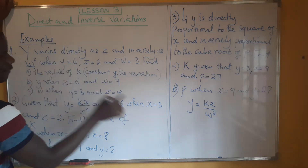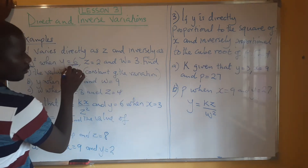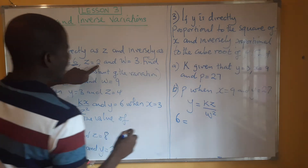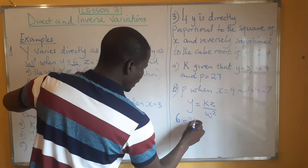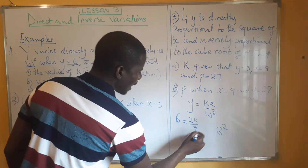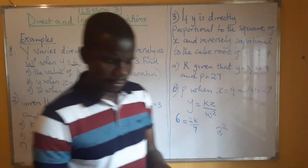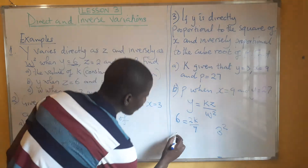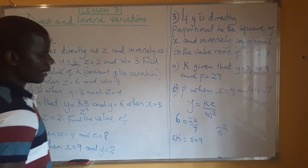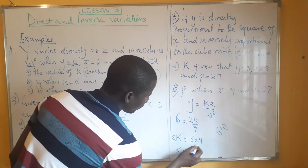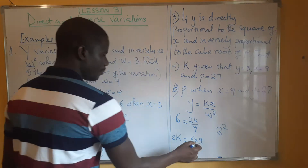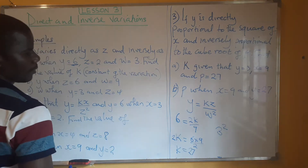We need to find the constant K using the given values. Y has been given as 6, Z has been given as 2, so 2 multiplied by K gives us 2K. Our W is 3 squared, which is 9. So we have 2K equals 6 multiplied by 9. Then K equals 6 times 9 divided by 2. That is 3 multiplied by 9, which gives us 27. Our K is 27.